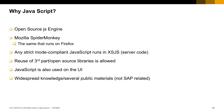XSJS is an extension built on top of the open source JavaScript engine Mozilla SpiderMonkey. That means any compliant JavaScript code runs in XSJS. You can reuse any third-party libraries as much as you want, and you can find several information resources not only related to SAP but in other sources like YouTube and Google, for example.